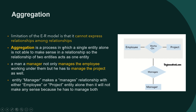Aggregation is a process in which a single entity alone is not able to make sense in a relationship. If you connect manager to employee alone, it is meaningless. If a manager manages only the project, it is also meaningless. So the relationship of two entities acts as one entity — we combine the relationship between these two entity sets as a single entity and connect it with the manager.